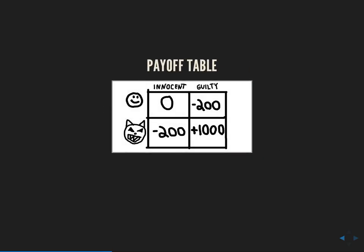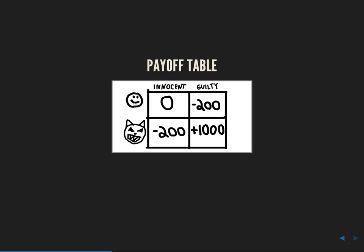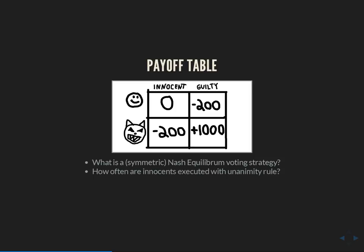To summarize the payoff table: it's a very reasonable setup. If a judge knew someone was human, the best thing to do would be to declare him innocent. If we knew he's a werewolf, the best thing is to execute him — the judge's incentives are perfectly aligned with what society wants. We're going to look at: first, what is the symmetric Nash equilibrium voting strategy? Second, how often are innocents executed with the unanimity rule? And third, how often would innocents be executed under majority rule instead?